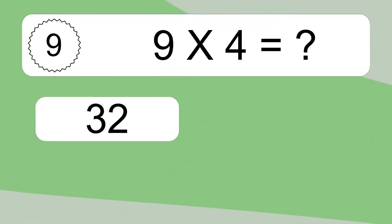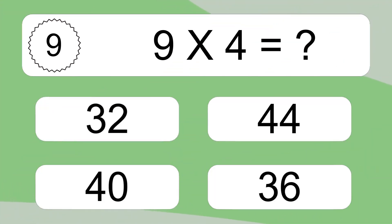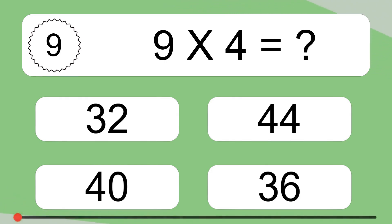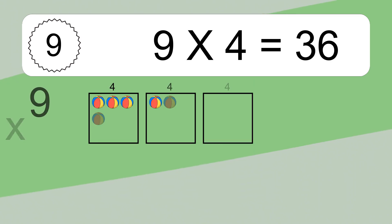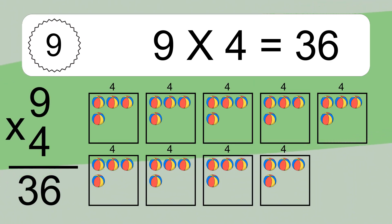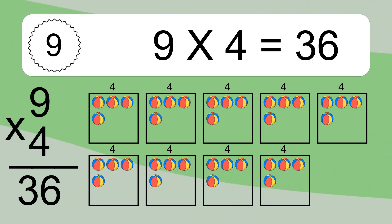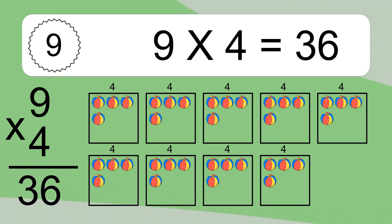9 times 4 equals what? 9 times 4 equals 36. We have 9 boxes, and each box has 4 colorful balls inside. If you count all the balls in all the boxes together, you will have 9 times 4 balls. This equals 36 balls.